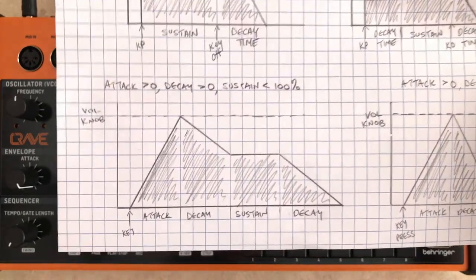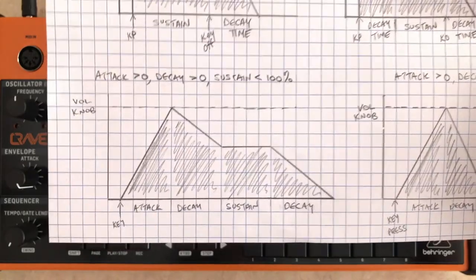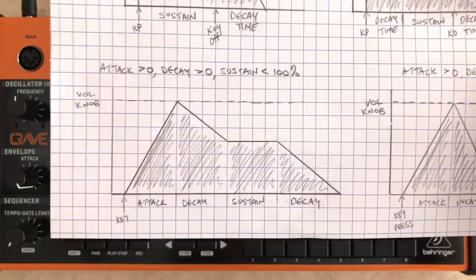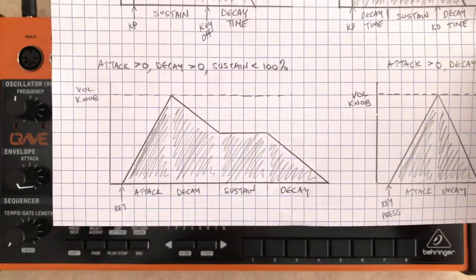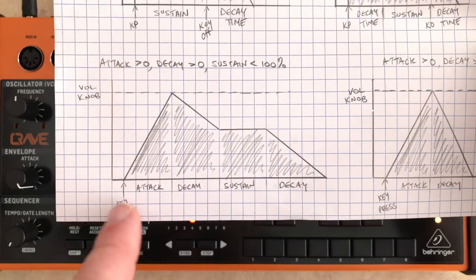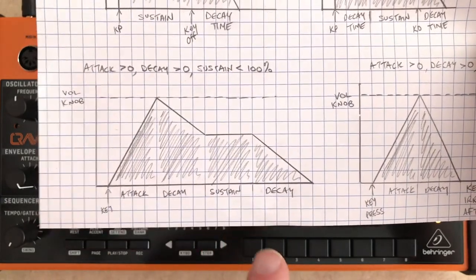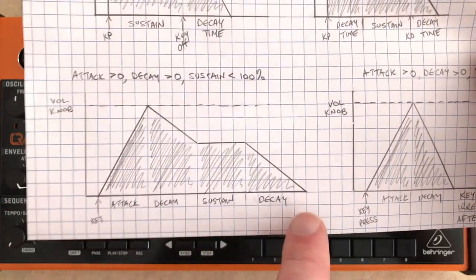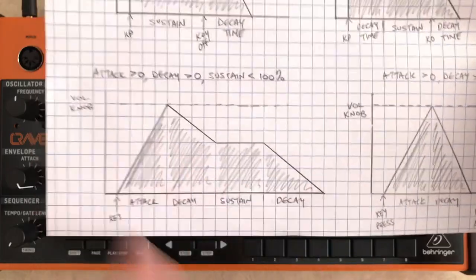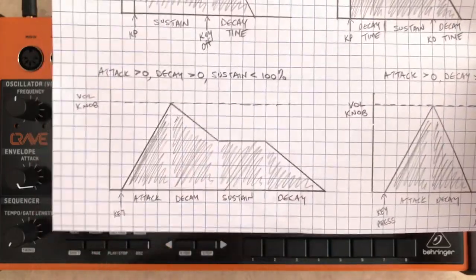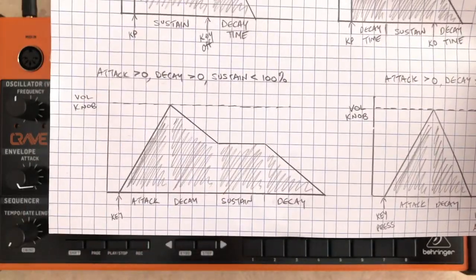Just like with the volume section, this is a one-time modulation. When I press a key, it will do this until I let go of a key, and then it finishes. It doesn't repeat the process — it's a one-time thing. It's a triggered action.